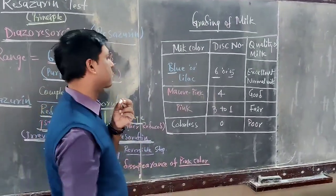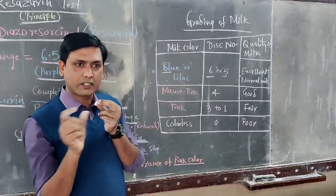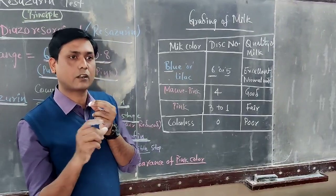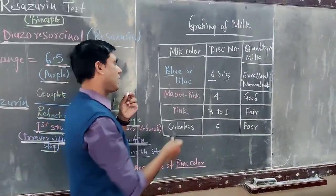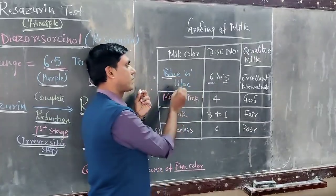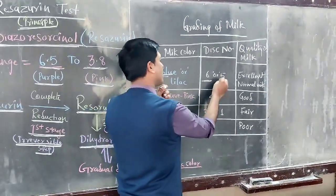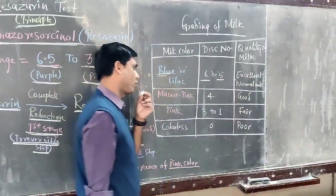There is a special colored disc prepared to check milk quality for the resazurin test. If the color matches disc number 6 or 5, this indicates excellent quality milk.